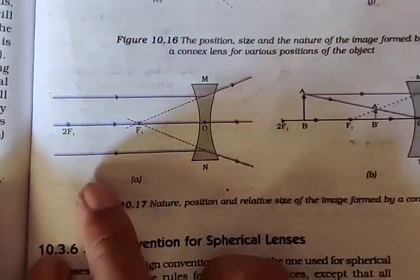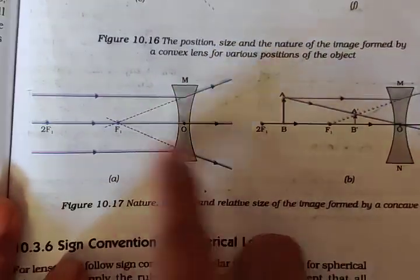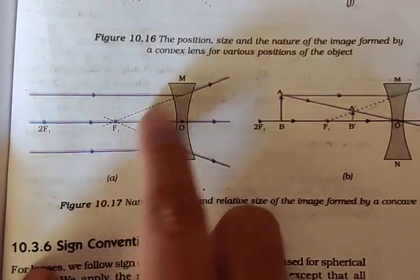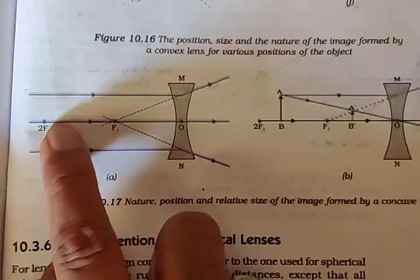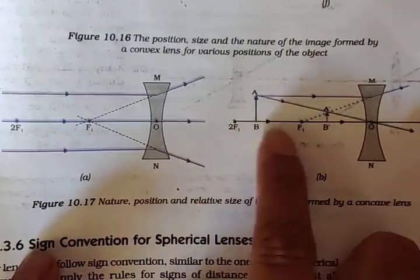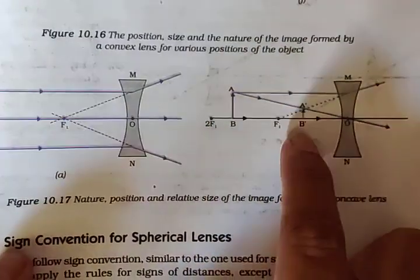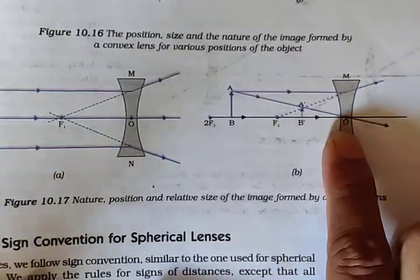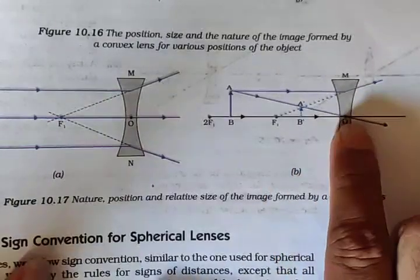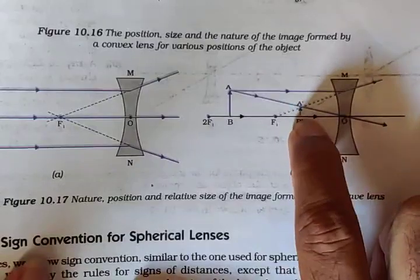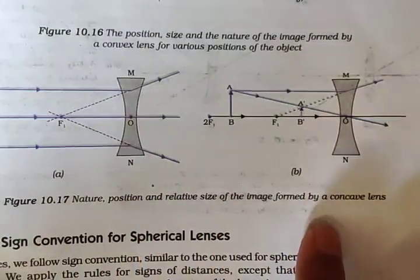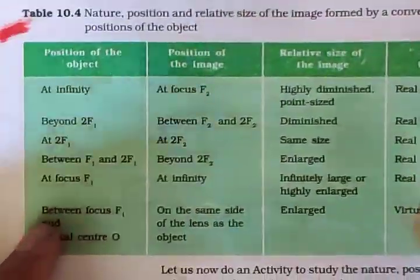Next, for a concave lens: when rays are parallel to the principal axis, the image is large, but if you revert, the image forms at F1. If the object is placed between 2F1 and F1, the image forms between F1 and the optical center — diminished. If placed beyond 2F1, the image is highly diminished. Based on this, we have to remember this table and write it down twice.